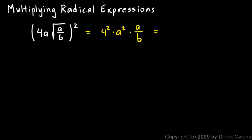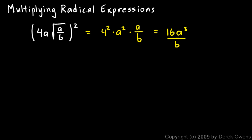We'll simplify that by making 4 squared equal to 16, and combining this a squared and this a to get a cubed. So 16a cubed over b will be the answer.